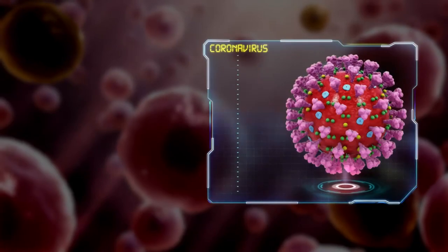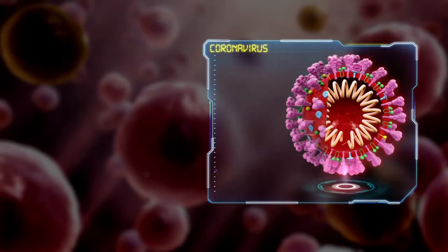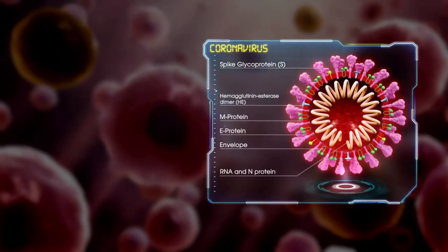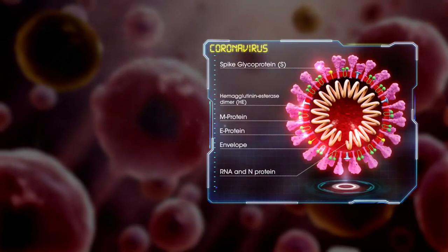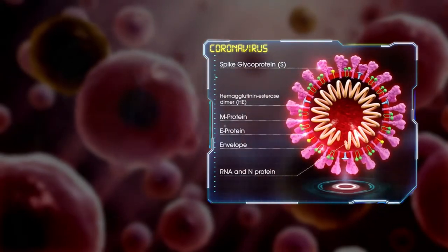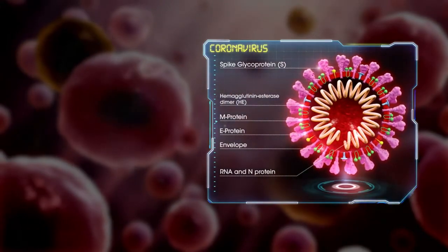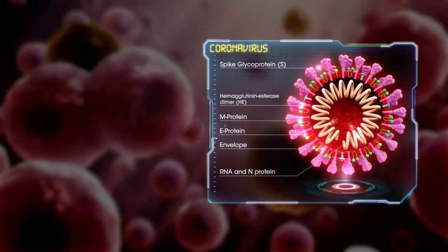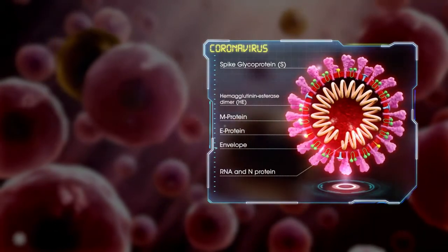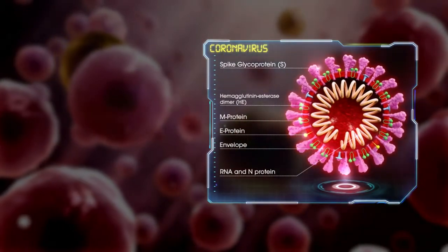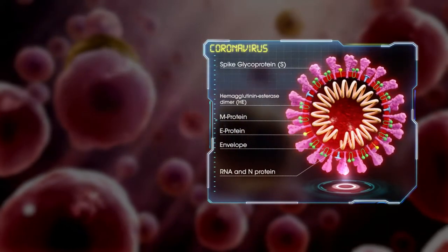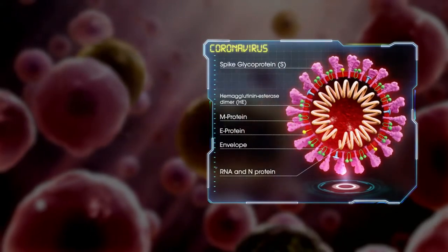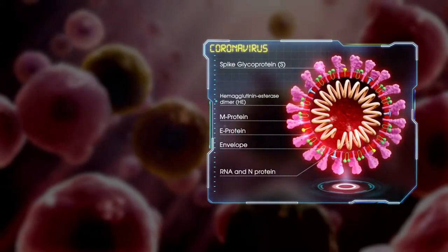The structure of coronavirus has multiple parts. Inside the virus lies the genetic encoding that allows the virus to hijack human cells and turn them into virus factories. A protein encapsulates the genetic material, known as the viral envelope. On the surface of the virion are S and HE proteins.